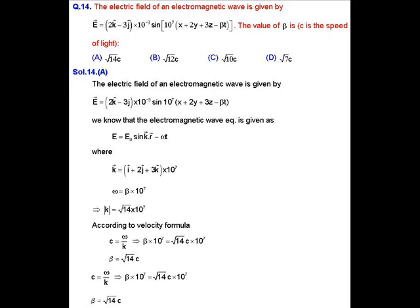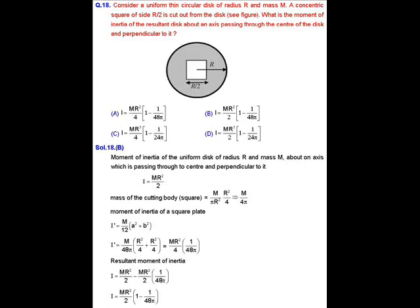We find the magnitude of k from the given vector, which is √14 × 10⁷. Using the velocity formula c = ω/k and substituting the values, we get β = √14 × c. The correct answer is option A.